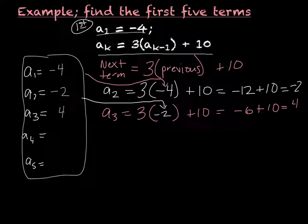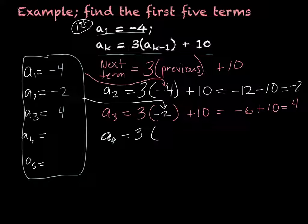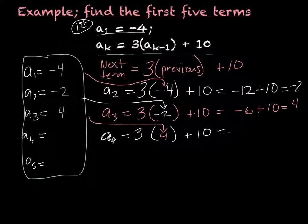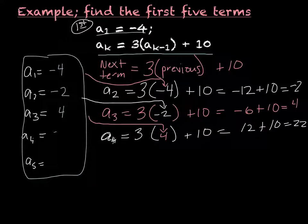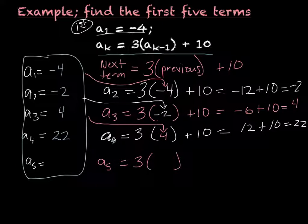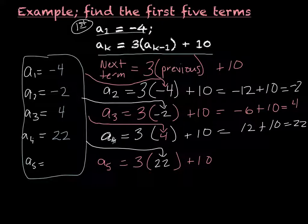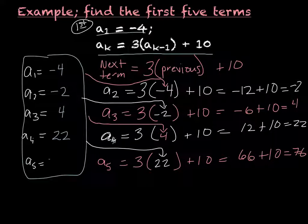Now A sub 3 becomes my previous term. To find A sub 4, I take 3 times the previous term, which is 4, plus 10. So 3 times 4 is 12, plus 10 equals 22. My A sub 4 term is 22. And finally, A sub 5 equals 3 times my previous term, which is 22, plus 10. That gives 66 plus 10, which is 76. So A sub 5 is 76.